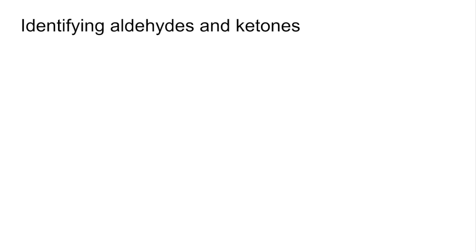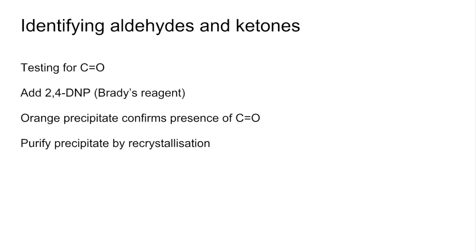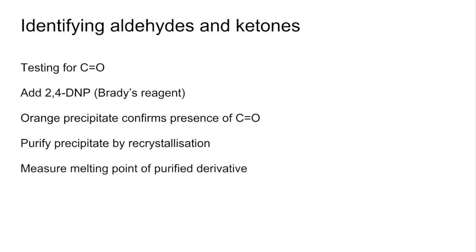Finally, identifying aldehydes and ketones. First, how do you test for the C double bond O? You add Brady's reagent, or 2,4-dinitrophenylhydrazine, and you would expect to see an orange precipitate if the carbonyl bond is present. This only tells us it is an aldehyde or a ketone, so to find out which one, we need to purify the orange precipitate by recrystallization and measure its melting point.